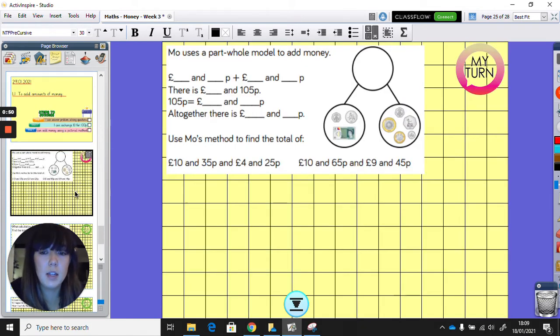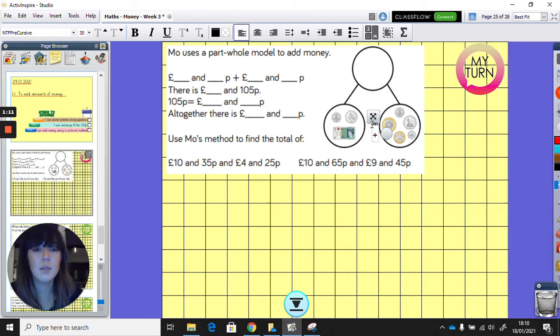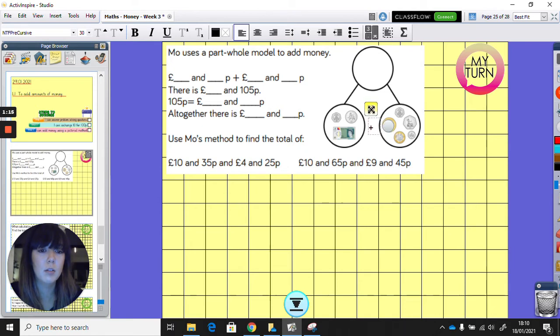So first of all, it is my turn. So for this question we're using the part-part-whole model. I'm going to have a go. You can have a go along with me if you like or you can just listen. Mo uses a part-whole model to add money. So what's happening here is these are our two parts and we add them together to get our whole. That's why it's called the part-whole model.